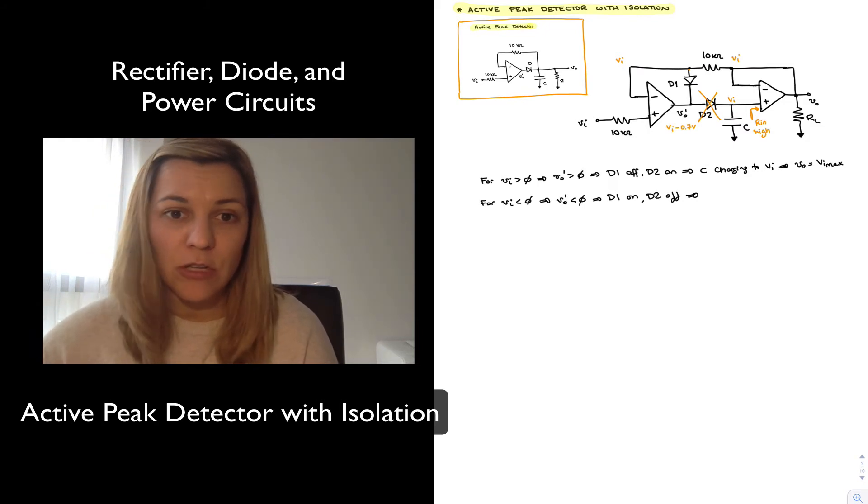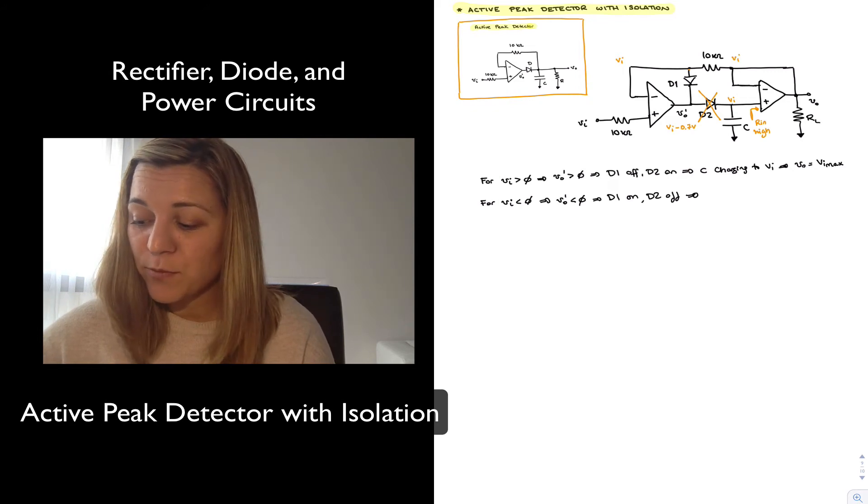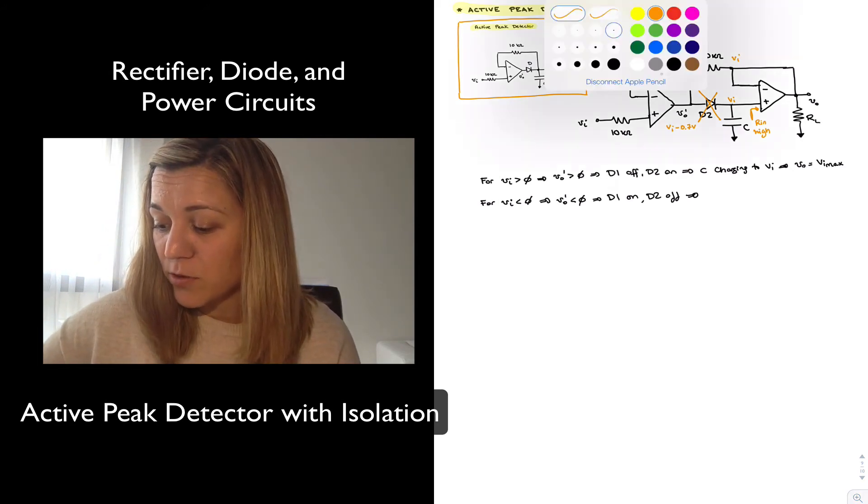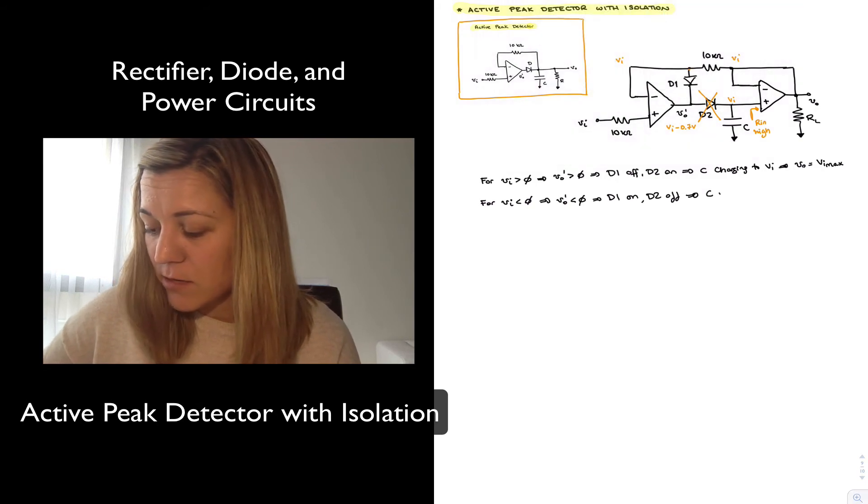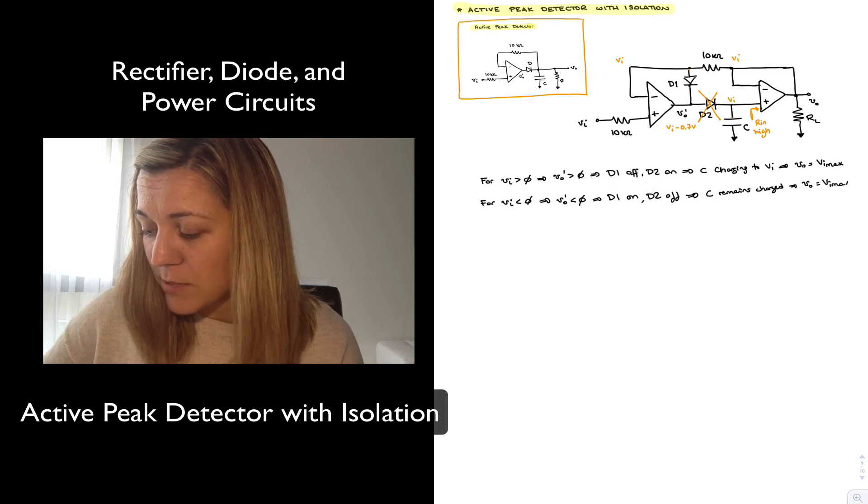And so ideally there is no current that goes into the input terminal of an op-amp and therefore it just sits there at that Vin value and because it has negative feedback the other terminal is also sitting at the value of Vin and therefore C remains charged. So my Vout is still equal to my maximum Vin.